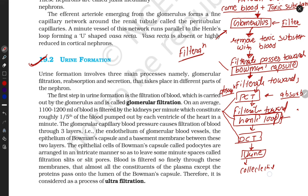Finally urine is formed and passes towards the collecting duct and is excreted out. So urine formation is divided into three processes: the first is filtration, the second is reabsorption, and the third is secretion. Let's discuss in detail — the first step in urine formation is filtration.